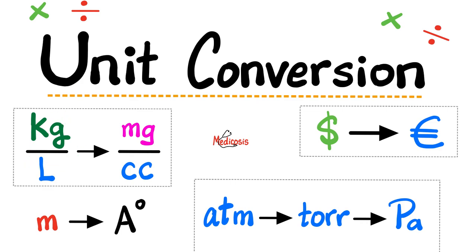For example, from kilograms per liter to milligrams per cubic centimeters, from meters to angstroms and backwards. We'll talk about density conversions, volume conversions, and pressure conversions. What's the difference between the atm, the torr, the pascal, and the millimeters of mercury? What is a milli? What is a micro? What is a nano? What is a kilo? What is a mega? What is a giga? Click the like button, click the subscribe button, and let's get started.